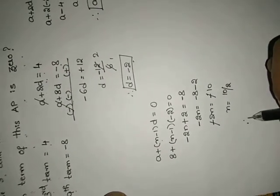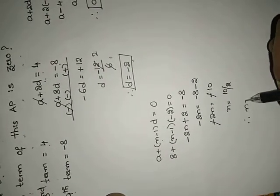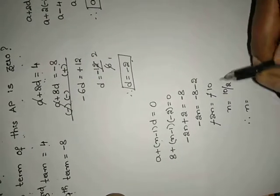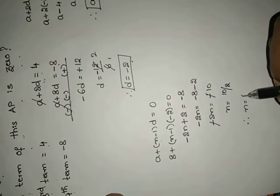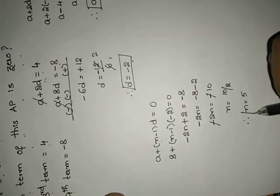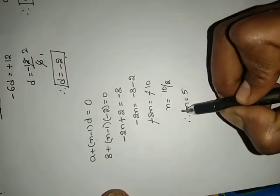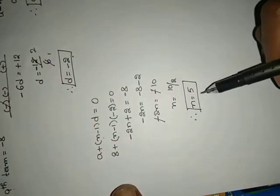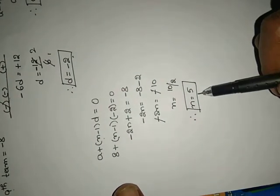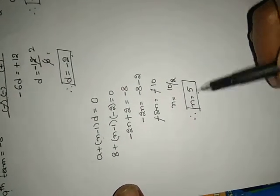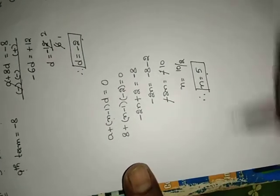N equals to 10 by 2. Therefore N equals to 5. So which term of the AP is 0? The 5th term. That's all.